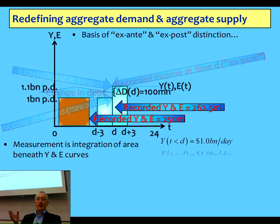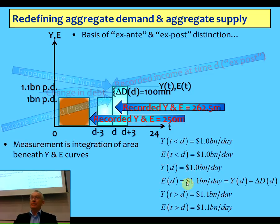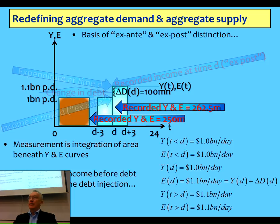The reason we make the mistake of not seeing this is that you can define the flow of income before the debt is taken out as one billion dollars a day, and the flow of expenditure the same. At the point where debt is taken out, the flow of income is still one billion, but the flow of expenditure is 1.1 billion — income plus the change in debt. After that point, both the flow of income and expenditure are 1.1 billion. That is why we've missed this from an accounting point of view.